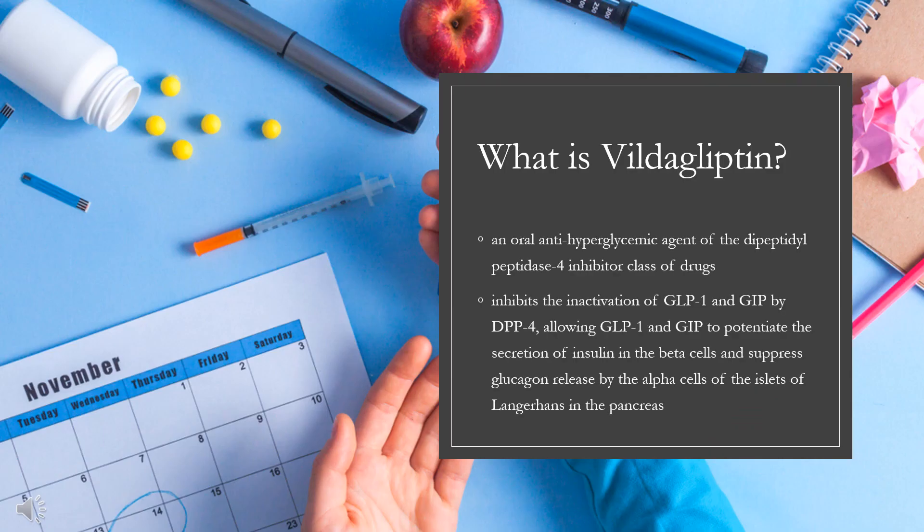What is Vildagliptin? Vildagliptin, sold under the brand name Galvis and others, is an oral antihyperglycemic agent of the dipeptidyl peptidase 4 (DPP-4) inhibitor class of drugs. Vildagliptin inhibits the inactivation of GLP-1 and GIP by DPP-4, allowing GLP-1 and GIP to potentiate the secretion of insulin in the beta cells and suppress glucagon release by the alpha cells of the islets of Langerhans in the pancreas.